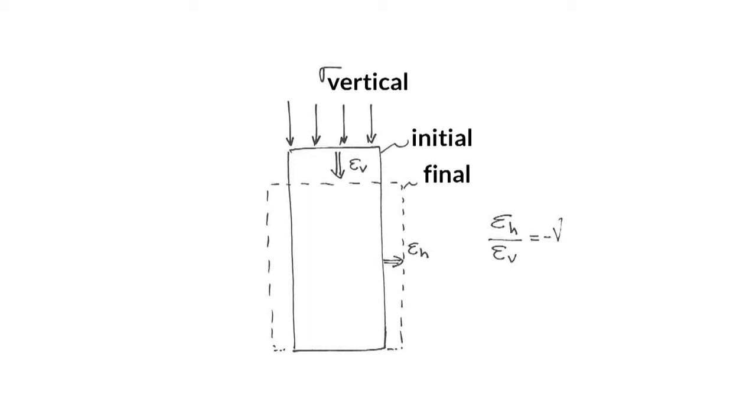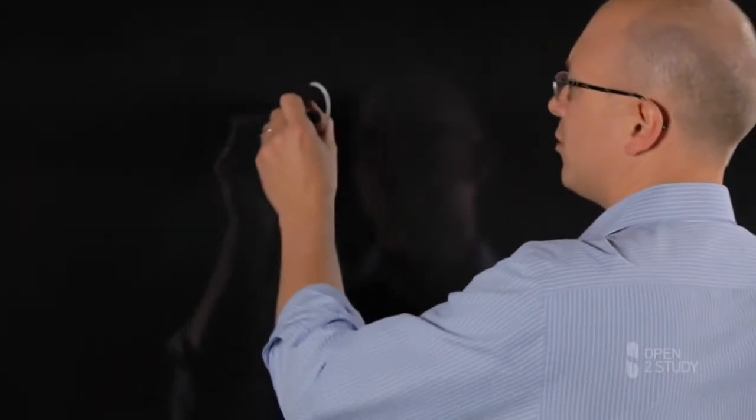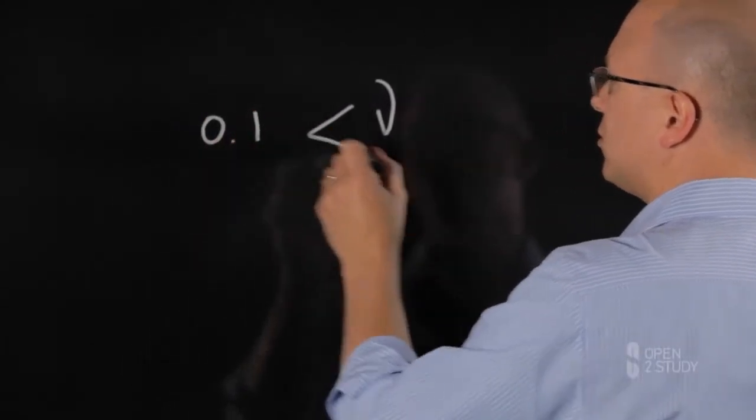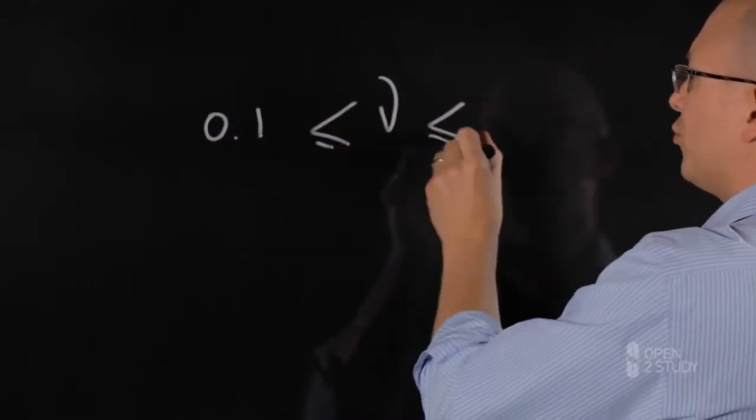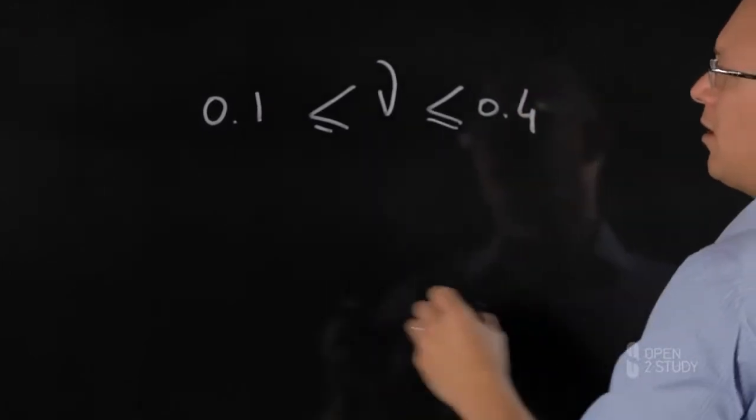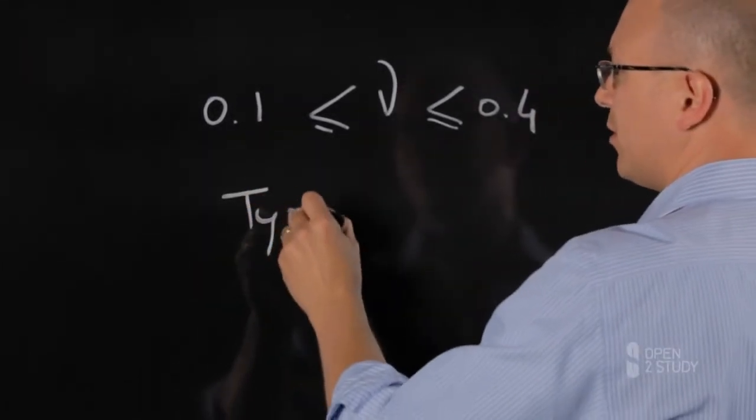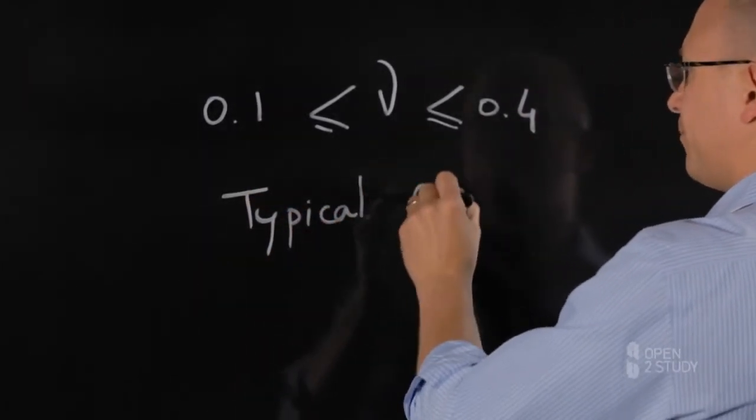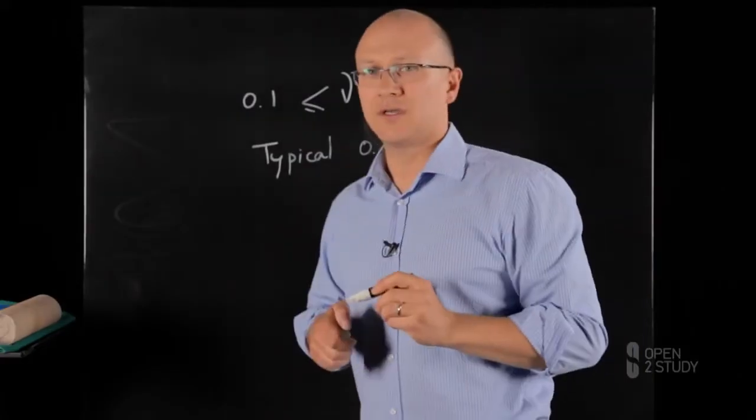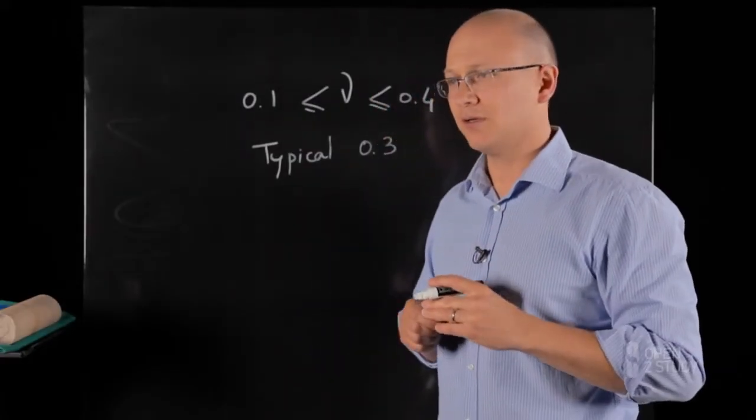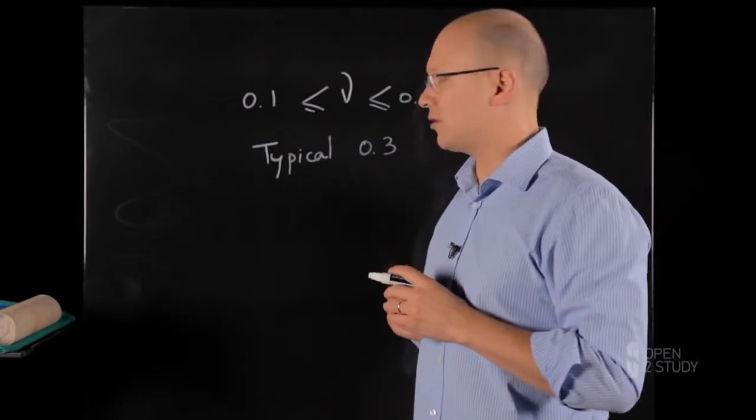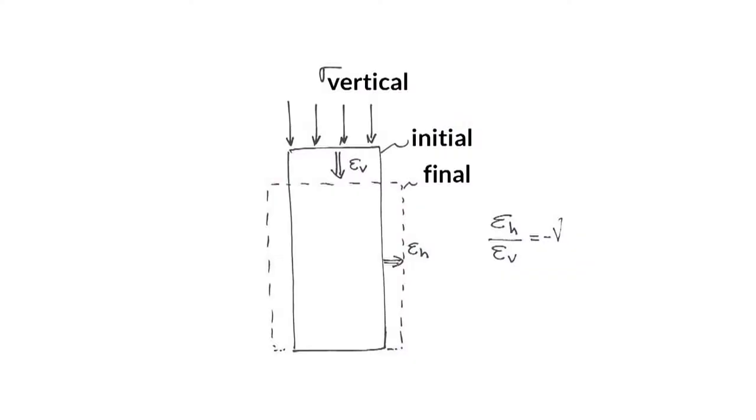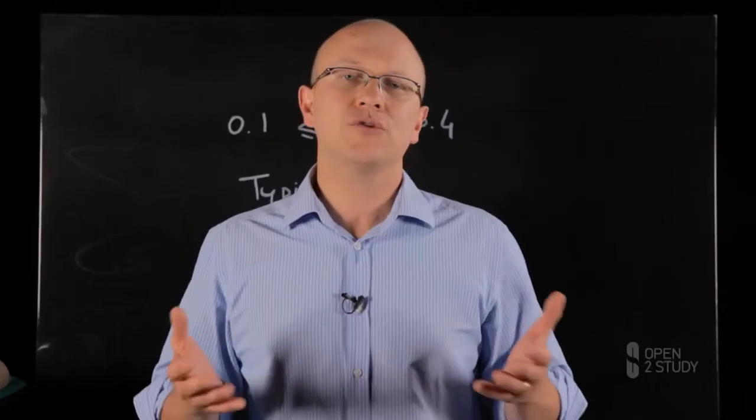The Poisson's ratio, noted nu, ranges from 0.1 typically to 0.4 for rocks. And a typical value would be around 0.3. You can notice a negative sign on the equation we showed on the picture. This is to reflect the fact that a compression in one direction creates an elongation in the other and vice versa.